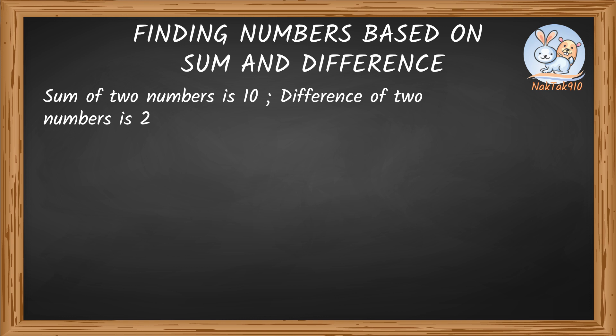Well, I can try a few numbers. Let's say 9 and 1. 9 plus 1 is 10 and 9 minus 1 is 8. So no, it can't be 9 and 1.